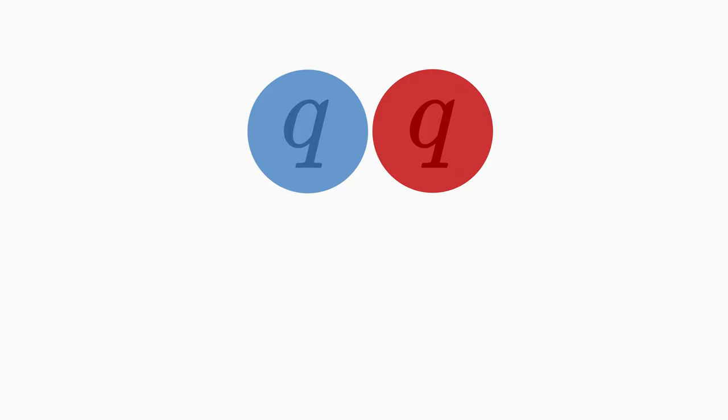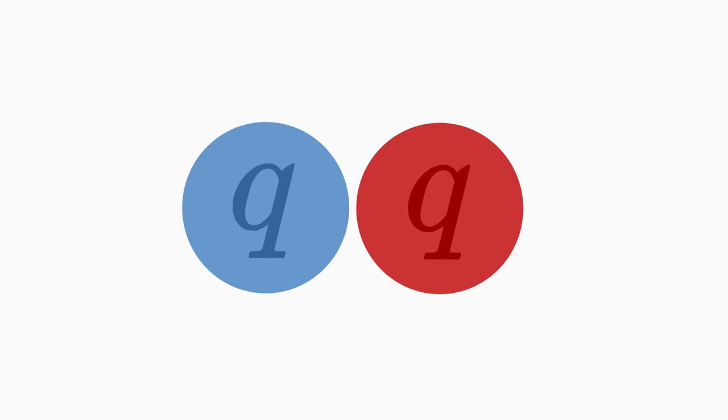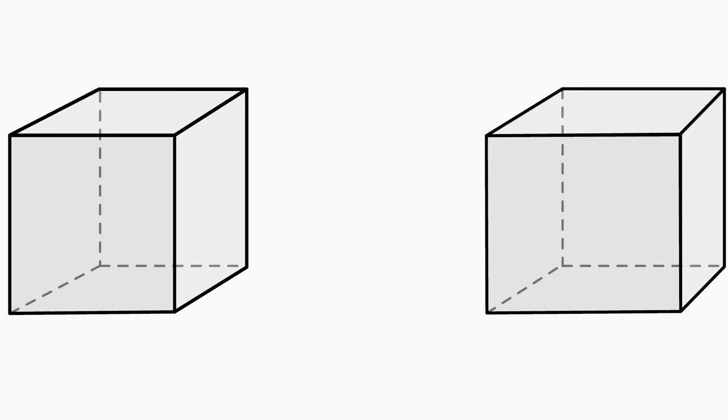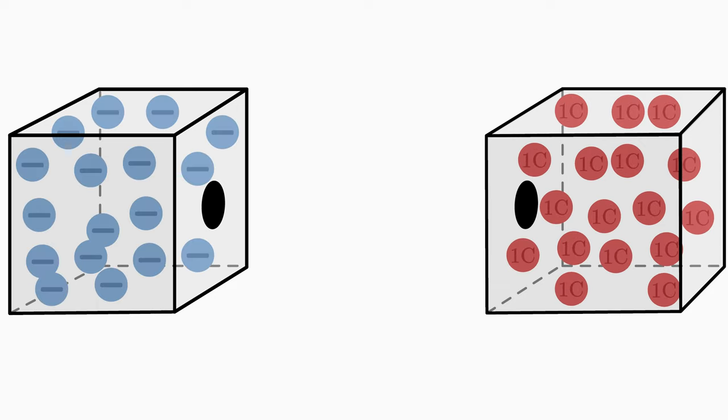But what do electric charges have to do with electric current? Let's do a little thought experiment with what we know so far. Take two boxes with a hole that can be opened and closed. First we close both holes. In one box we put many positive particles. Each of them carries the same charge Q, and for fun it is one Coulomb. In the other box we place many negative particles, each with a negative charge.